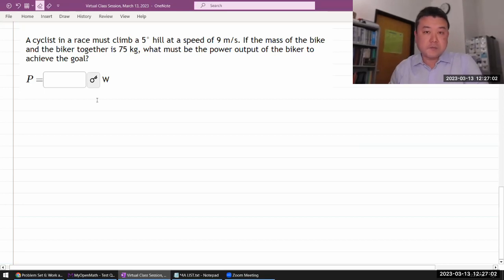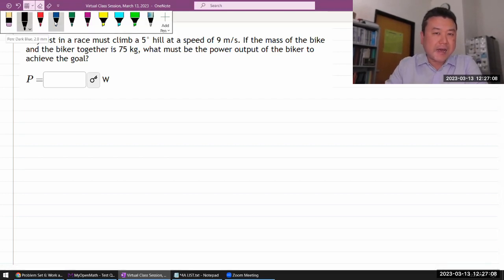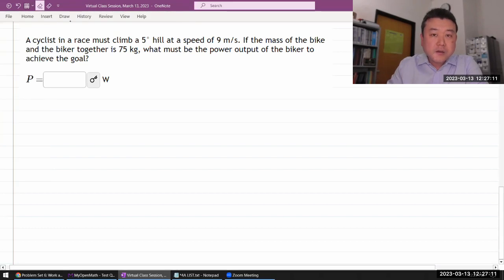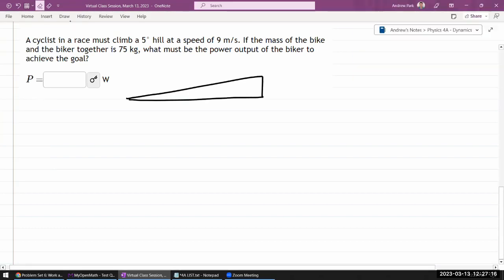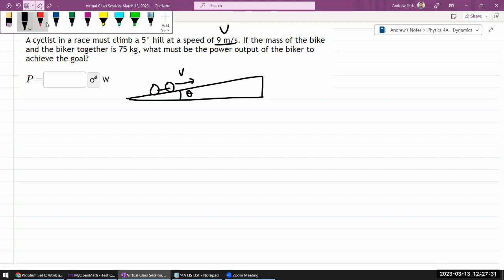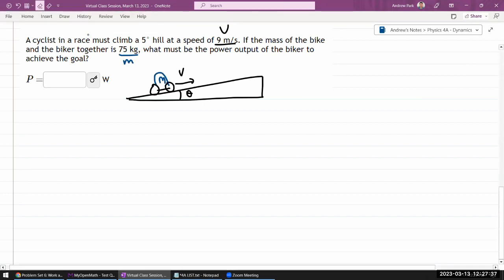Okay, let me sketch out the situation for this question. It says a cyclist in a race must climb a hill at some angle. There's a cyclist moving at some speed, and the mass of the bike and the biker together is some total mass. The question is, what must be the power output of the biker to achieve the goal?